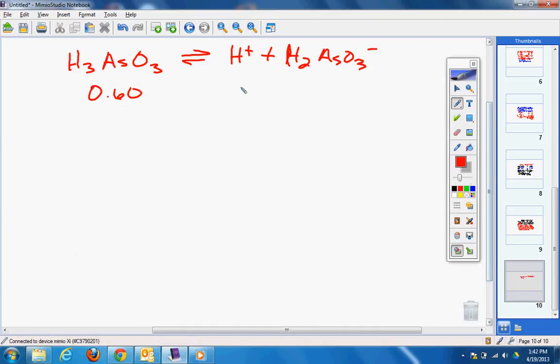How much of this do I have? Zero and zero. And then my equilibrium is going to be 0.6 minus X, X, and X.